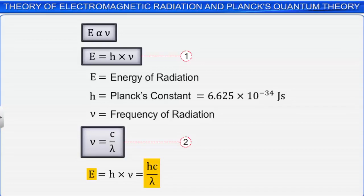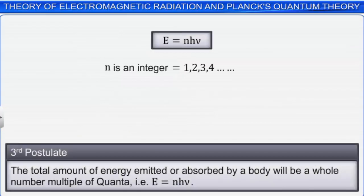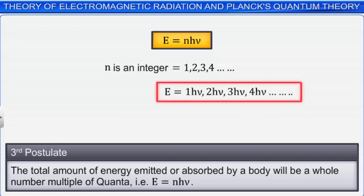The third postulate states that the total amount of energy emitted or absorbed by a body will be a whole number multiple of quanta. This means an atom or molecule can absorb or emit either one quantum of energy or any whole number multiple of quanta. Note that only certain values of energy are permissible. This is called the quantization of energy.